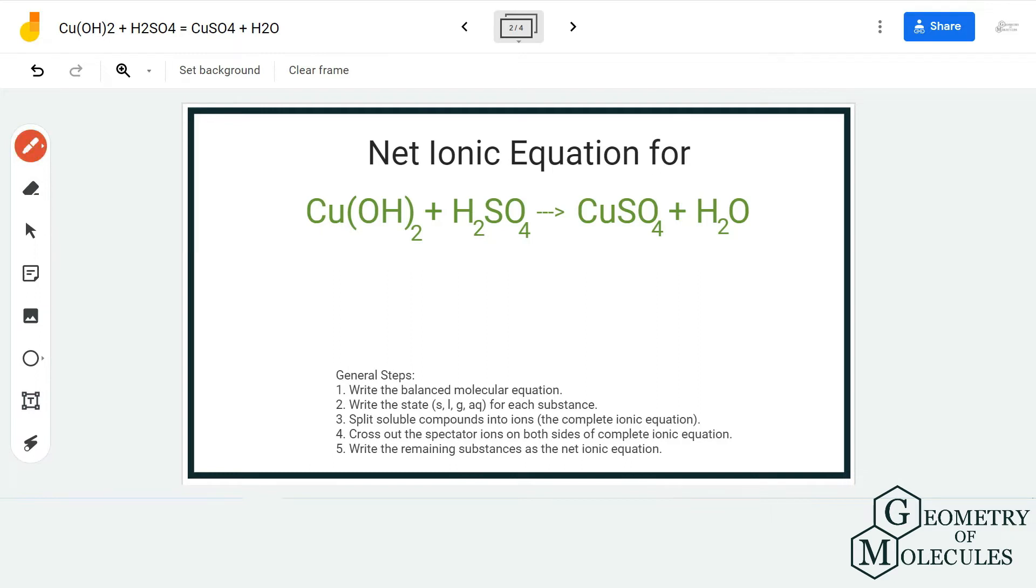To balance this equation, I'm going to add a coefficient of 2 here and it will be balanced. If you count the number of atoms on both reactant and product sides, you'll see the same number of atoms for all elements—copper, oxygen, hydrogen, and sulfur—on both sides.